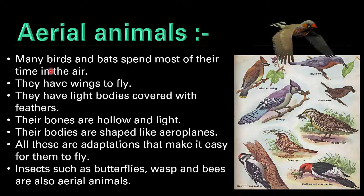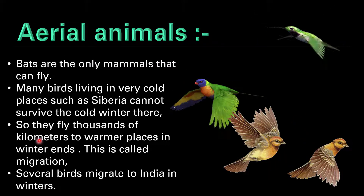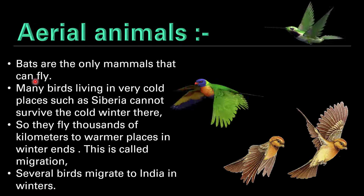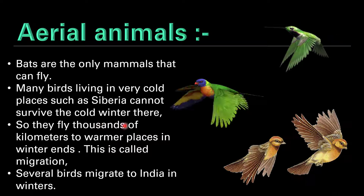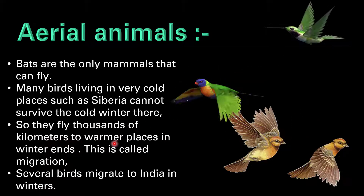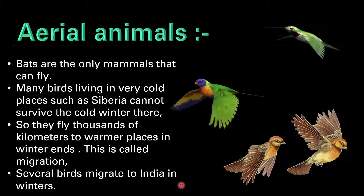Now let's talk about aerial animals. Many birds and bats spend most of their time in the air. They have wings to fly, light bodies covered with feathers, hollow and light bones, and their bodies are shaped like aeroplanes — all adaptations that make it easy for them to fly. Insects such as butterflies, wasps and bees are also aerial animals. Bats are the only mammals that can fly. Many birds living in very cold places such as Siberia cannot survive the cold winter there, so they fly thousands of kilometers to warmer places in winter. This is called migration. Several birds migrate to India in winters.